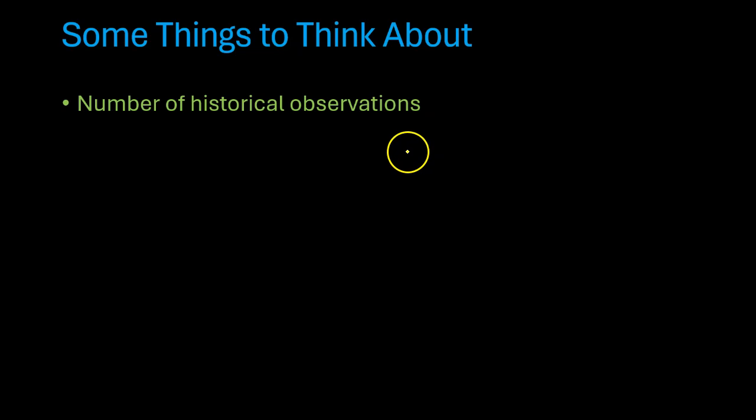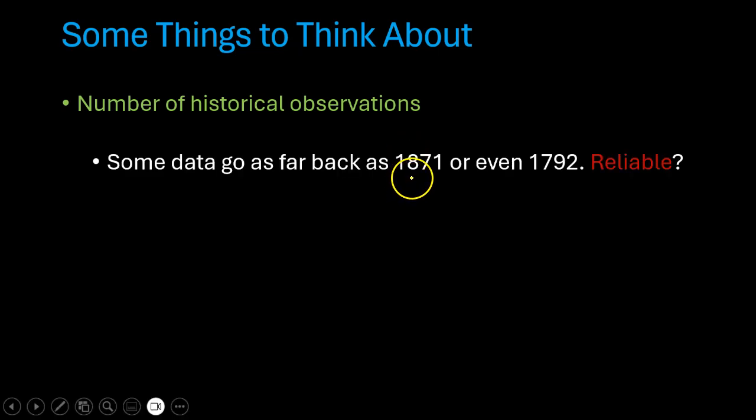When you look at Damodaran's website, you see that the data goes from 1928 to 2023. Now, there are some people who will tell you that these data on stock returns and bond returns go all the way back to 1871. In fact, some databases go all the way back to 1792. So here's the question, should you average across all these observations? Well, some people say yes, some people say no. For one, there is a question of reliability. How reliable is all this data that is very ancient?